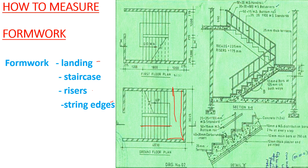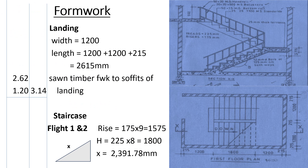The measurement of our landing: we have 1200 for the width, and for the length we have 1200 plus 215 plus 1200, which gives us 2615 millimeters. We need a timber placed along these lines to hold the formwork. The width is 1200 and the length — from this point to that point, not including the wall — is 1200 plus 215 plus 1200, giving us 2615 millimeters.